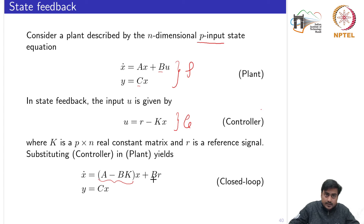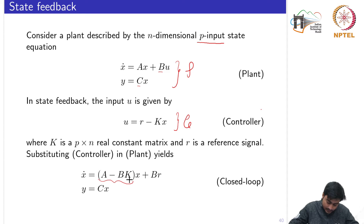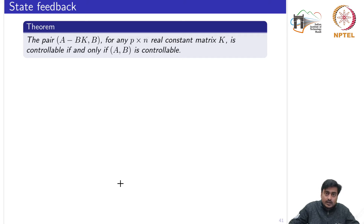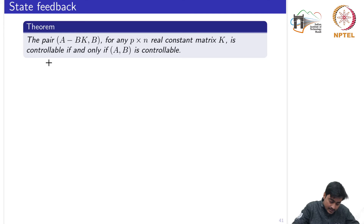Once we substitute U into the plant, we obtain the state space equation for the closed loop system. The A matrix now changes to A minus B times K. The B matrix remains the same but now becomes a distribution matrix of the reference signal, and there is no change in the C matrix. We will discuss some designs to synthesize this K.